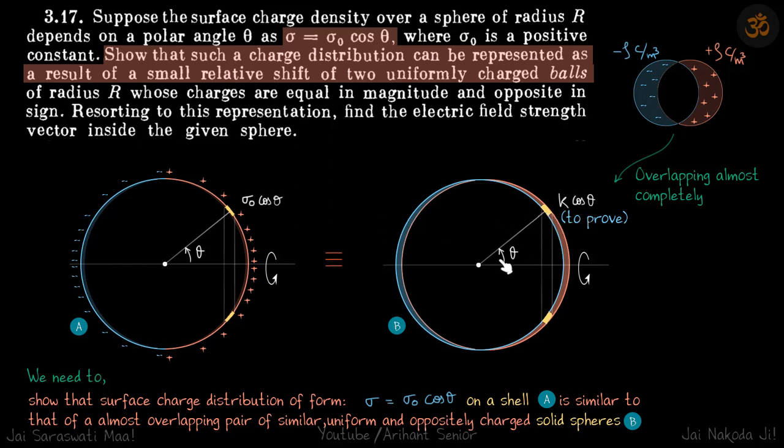We need to prove that on a structure like this, charge distribution is similar to that of this shell. We need to prove that at any angle theta on these overlapped spheres, the sigma is going to be around K cos theta. K can be some other constant, but we have to prove it's a function of constant into cos theta. We need to show that surface charge distribution of form sigma equals sigma not cos theta on a shell is similar to that of an almost overlapping pair of similar uniform and oppositely charged solid spheres.